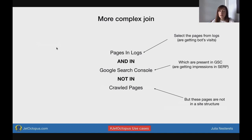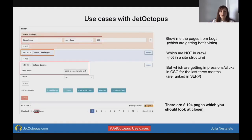These pages are in logs, they are in Google Search Console, but they are not in crawled pages. You should look closer at these pages because these are orphaned pages — crawl budget is being spent there and these pages are getting traffic, but they are not inside the site structure. You should decide if these pages are valuable and take them back into the site structure, or close them if they are legacy or trash pages and close them from indexation.